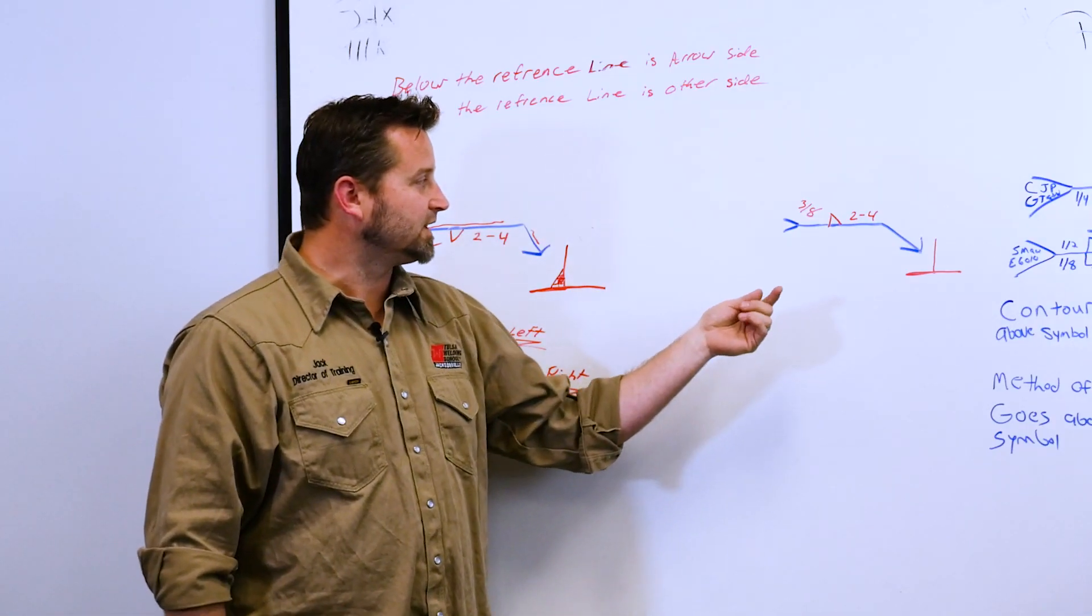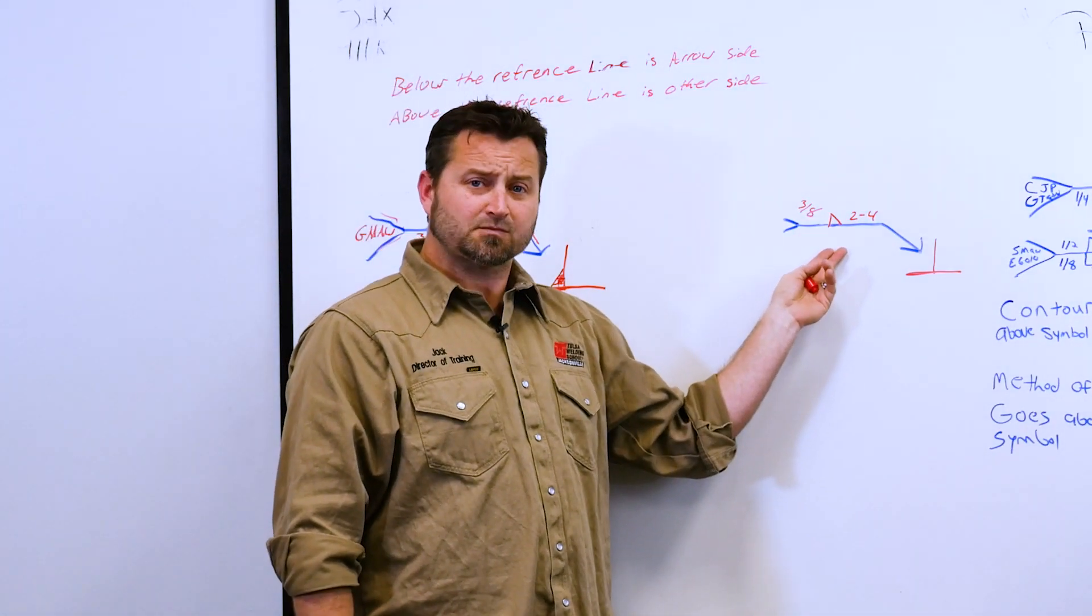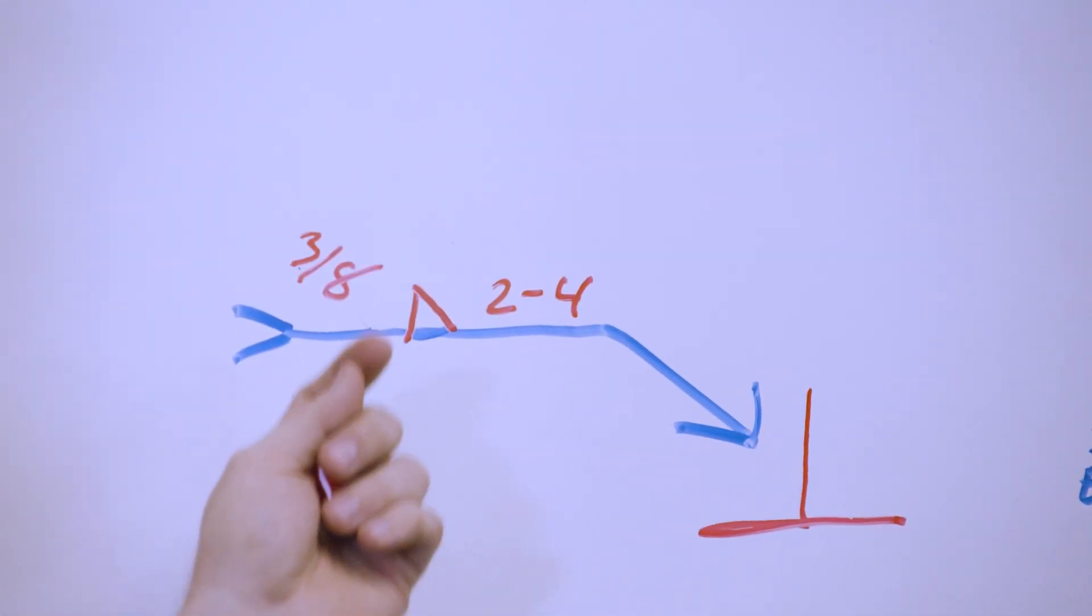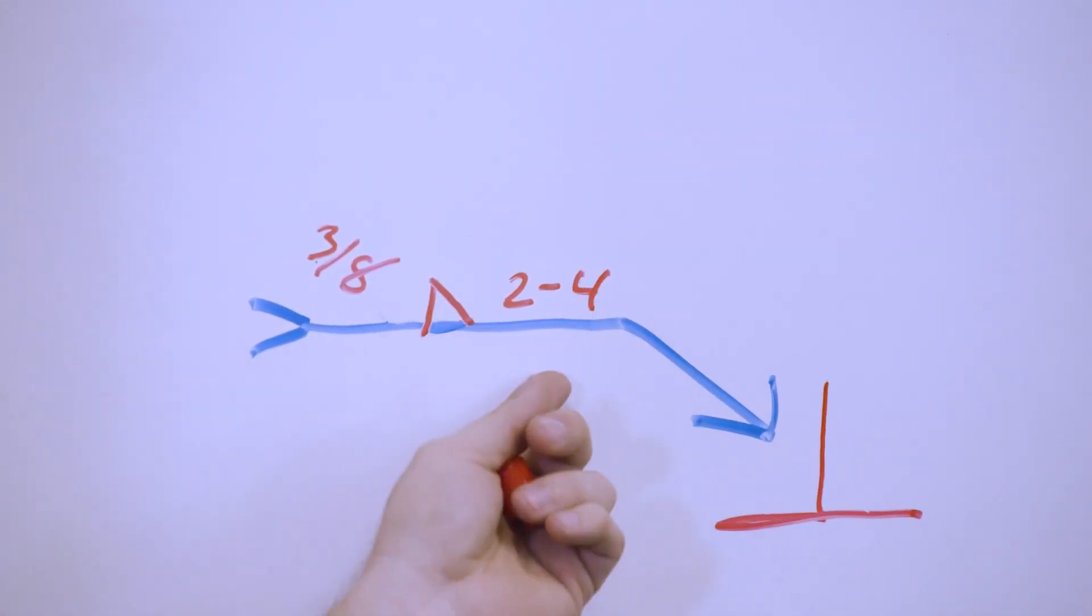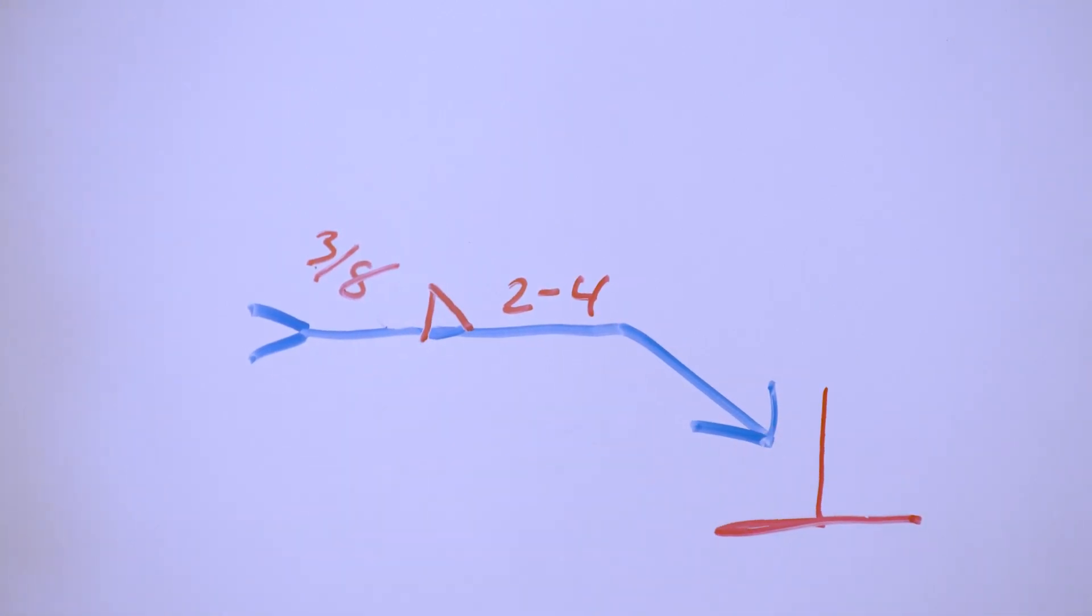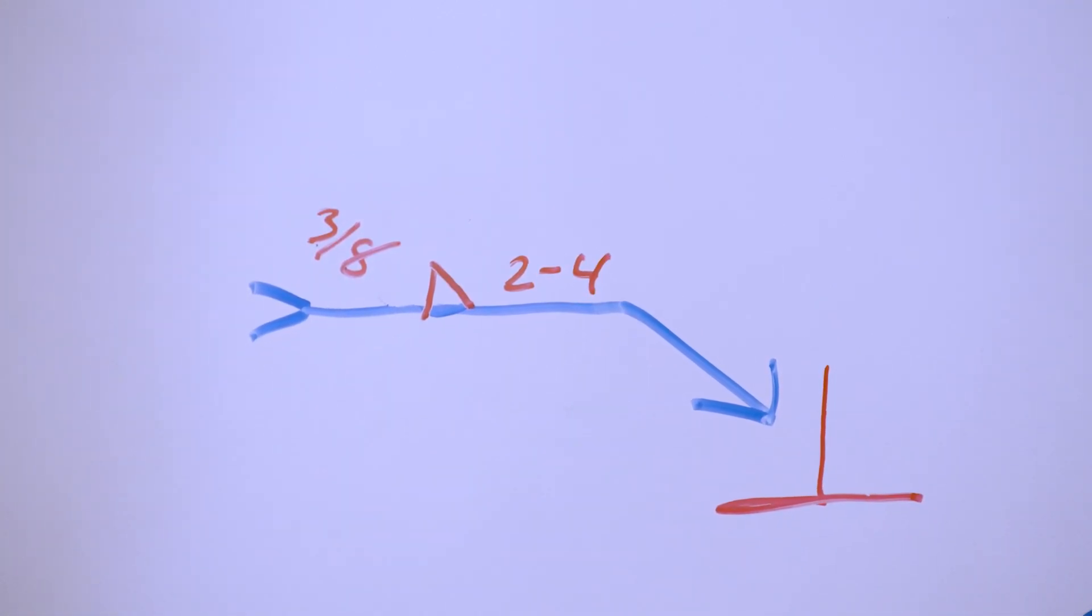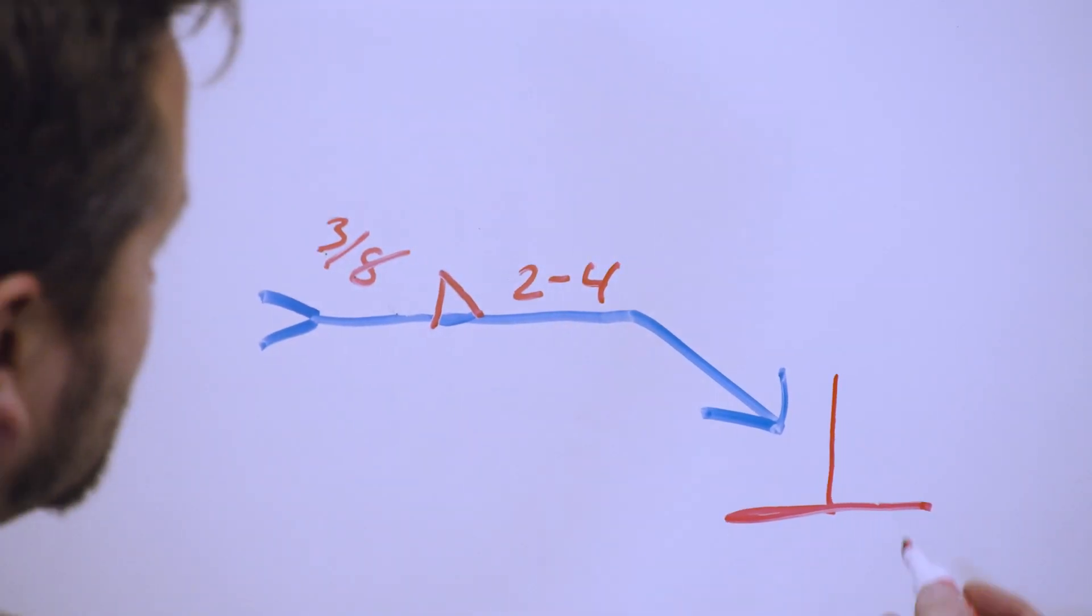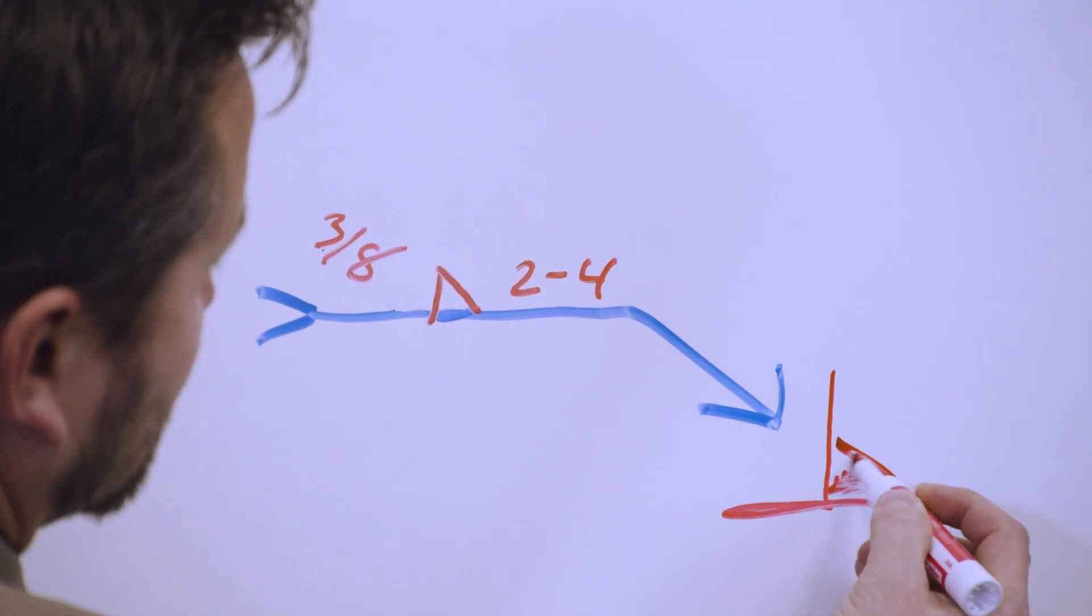So let's try another one. Let's step over here real quick. We have the same thing. Same reference line, same arrow, same fillet, same tail. Length is still, the size is still the same, the length is still the same. So where do we put our weld this time? Remember, look at the notes. Go back. If it's above the reference line, it goes to the other side. So where are we going to put our weld? To the other side.